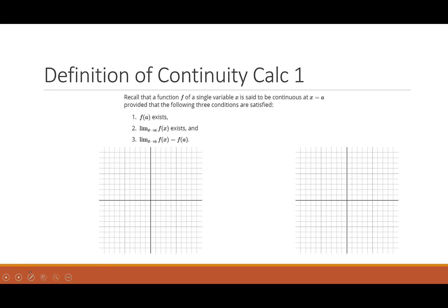So let's review what we had in Calc 1. We say a function is continuous at a point A, provided the following three are satisfied. First, f of A has to exist, so A is in the domain of your function. Two, the two-sided limit as x approaches A of f of x exists — this means we don't have any jumps, we don't have any vertical asymptotes. And then finally, three, the limit is actually equal to the function value.